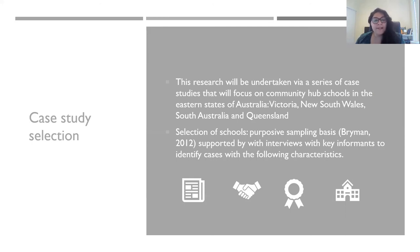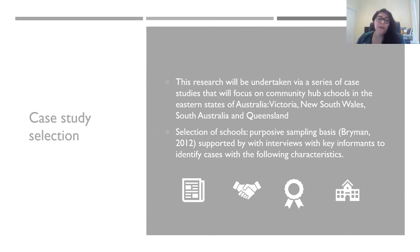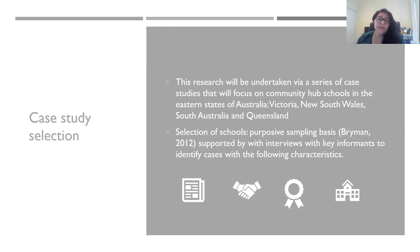First, schools with an explicit vision to work as a community hub, or including the community as one of the main actors in their vision statements. Secondly, schools working in partnership with different organizations to provide services and programs to the community — for example, in partnership with local authorities or non-governmental agencies. Thirdly, schools recognized as exemplars in their work and relationship with the community. And finally, the willingness of each school to share practices and to participate in a research project.